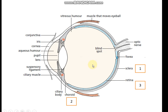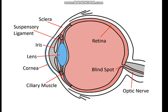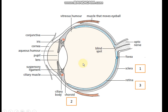Aqueous humor is a watery fluid, while vitreous humor is a jelly-like fluid. Comparing their functions: aqueous humor provides support to the front chamber of the eye. The one with the grayish color is aqueous humor, and the one with the pinkish color is vitreous humor. Both of them are there to provide support and a specific shape to the eye.